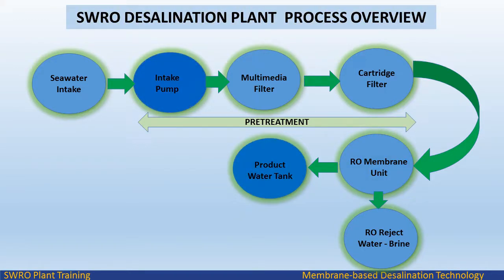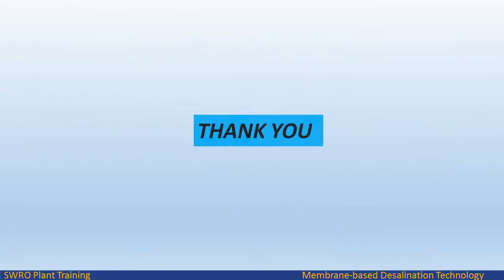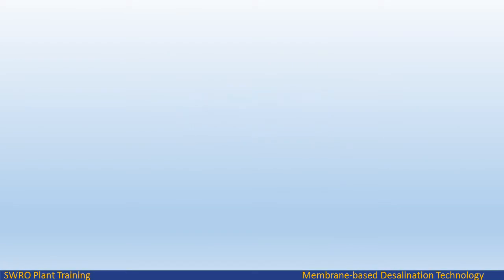Downstream, the product water forwarding pumps dose lime milk for pH adjustment and chlorine for disinfection. Product water is pumped after post-treatment. Reject water from the RO units is sent to the outfall. Thank you for watching this video.